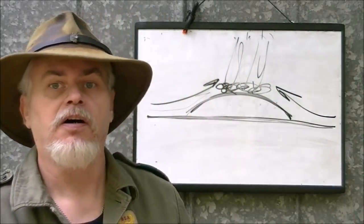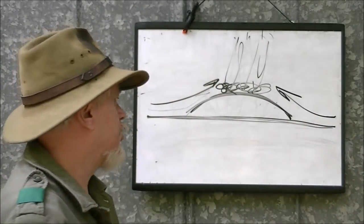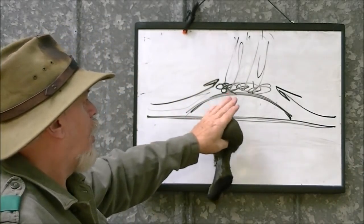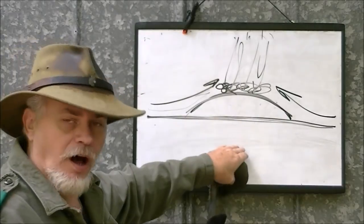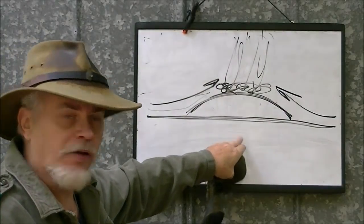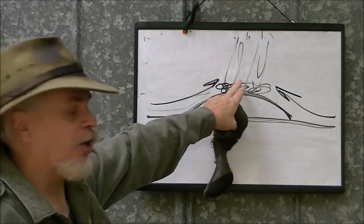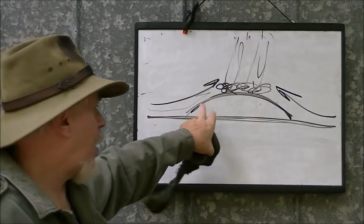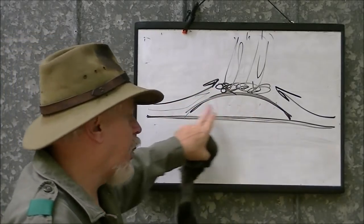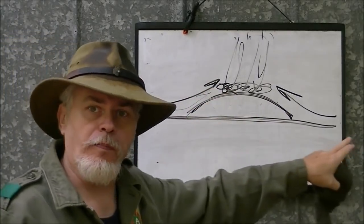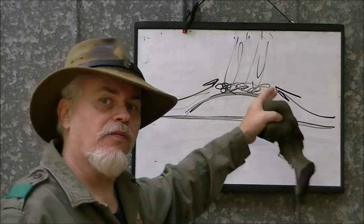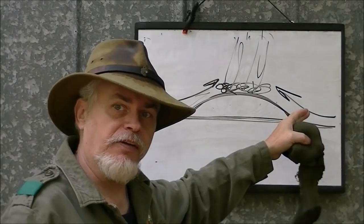Scrape up dirt to form a hula-hoop-sized circle about one to three inches high and build your fire on top. When done, broadcast it and there's little or no evidence. A fire in a hole smothers; a fire up high gets air. You're also above the water table, which helps control the moisture problem.